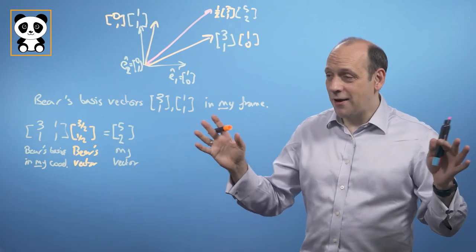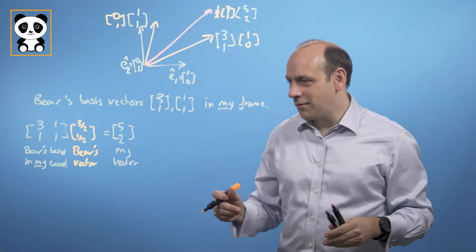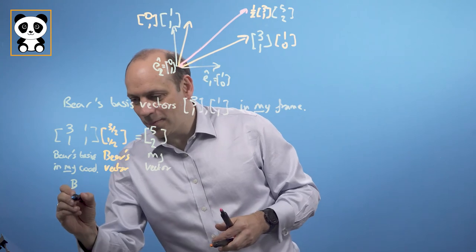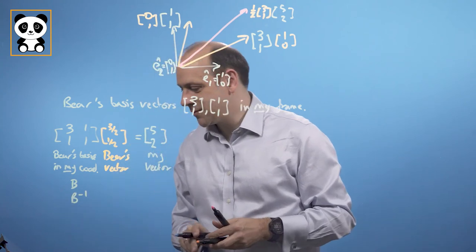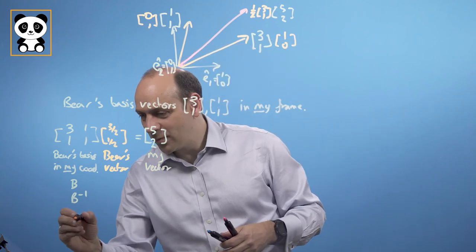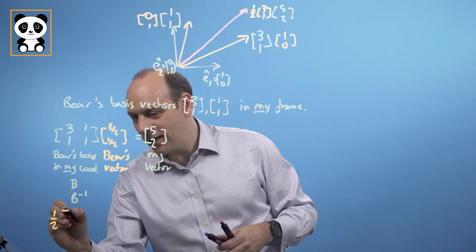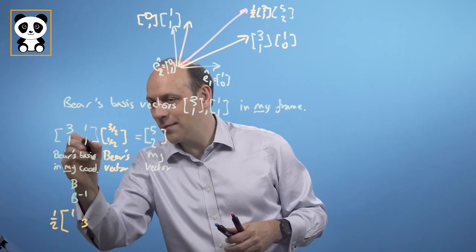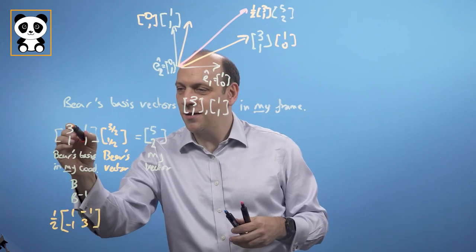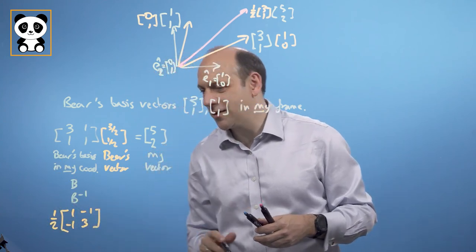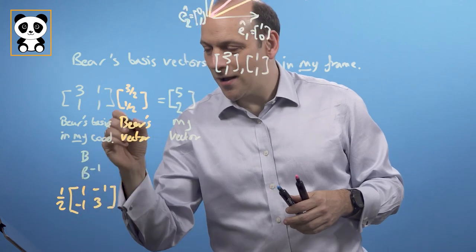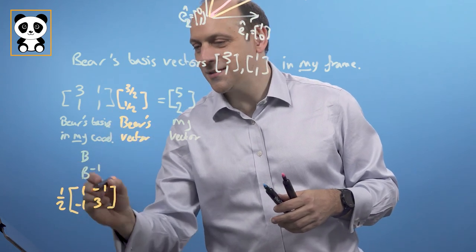How do I perform that reverse process? It's going to involve the inverse. If I call Bear's transformation matrix B, I'm going to want B inverse, which is B to the minus 1. The inverse of this matrix is actually pretty easy — it's 1/2 times the matrix with 1, -1 on the off-diagonal and 1, 3 on the leading diagonal. We flip elements on the leading diagonal and put a minus on the off-diagonal terms. The determinant is 3 minus 1 equals 2, so we divide by 2, giving a factor of 1/2. So that's B to the minus 1.